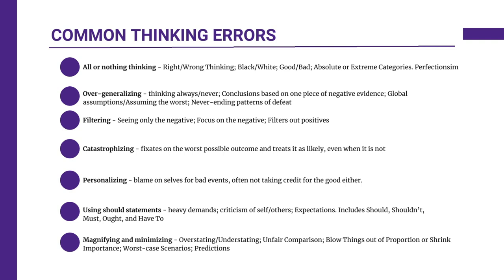Should statements involve having a rigid, unrealistic rule for oneself or others, leading to feelings of guilt or frustration when these expectations aren't met. Sometimes this is linked with moral anger, where others or yourself aren't following a set of values or rules, which can create a lot of anger. Believing that you should always excel at everything leads to disappointment when a mistake occurs. To change this, replace 'should' with more flexible language, understanding that imperfection is a natural part of the human experience. Magnifying and minimizing involves exaggerating the importance of negative events while downplaying positive aspects — making a mountain out of a molehill. An example is magnifying a small mistake into a major failure or minimizing a significant accomplishment. To change this, develop a more balanced perspective by objectively evaluating the significance of events and recognizing both strengths and weaknesses.